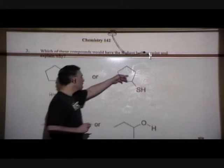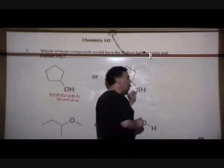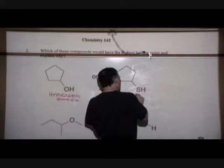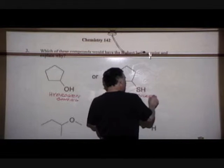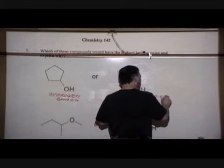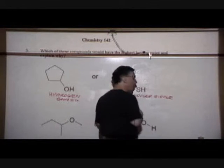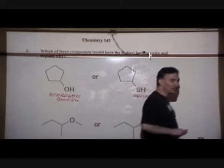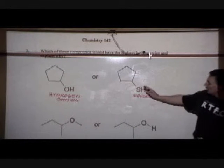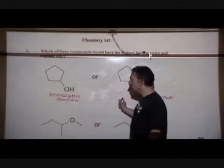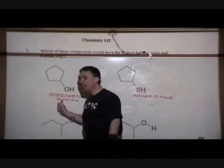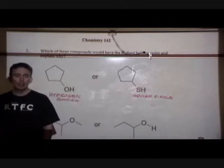So our alcohols are capable of hydrogen bonding from one molecule to its neighbor. Our thiol, which is structurally very similar, it's a cyclopentyl chain, is only capable of induced dipole interactions. So the forces of attraction are much weaker between two molecules of the thiol. So it's going to be a relatively lower boiling point compared to the higher boiling point for the alcohol, because of stronger intermolecular forces of attraction, hydrogen bonding from one molecule to its neighbor.